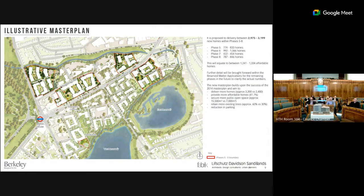The broader benefits we see at this stage of the masterplan include delivering more homes, providing more affordable homes, and securing more public space — an uplift from 7,000 to 15,500 square metres. Through this approach we are retaining a much larger number of trees on the estate: the 2014 scheme would have seen about 30% tree retention and we're currently closer to 60%.